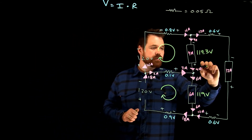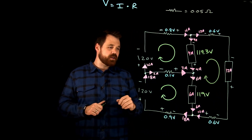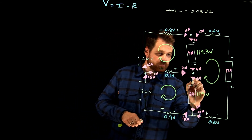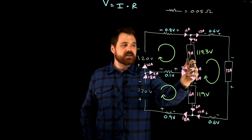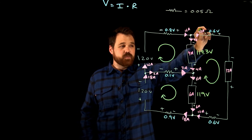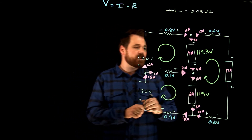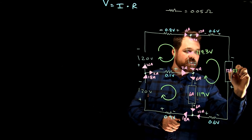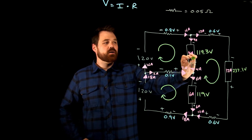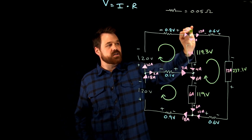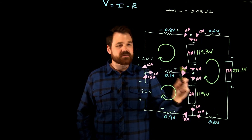The very last loop is this loop right here. We have positive 119, positive 119.3, minus 0.6, minus 0.6. So when we do all that math, that means this load has to be 237.1 volts. Let's do the math: positive 119 plus positive 119.3 minus 0.6 minus 237.1 minus 0.6 equals 0.